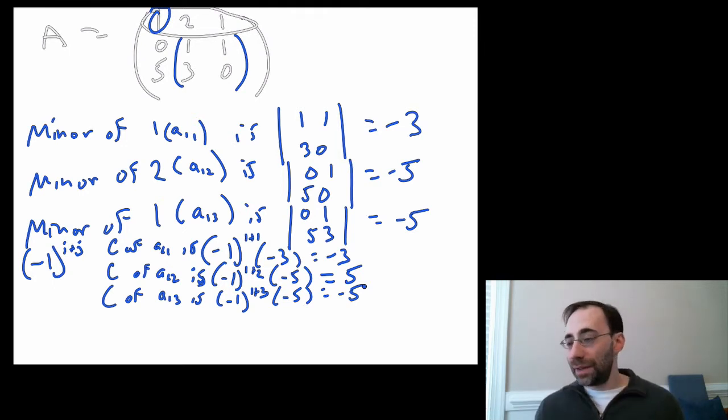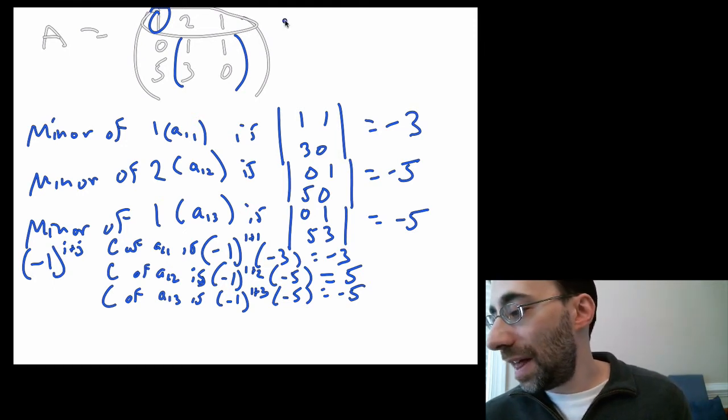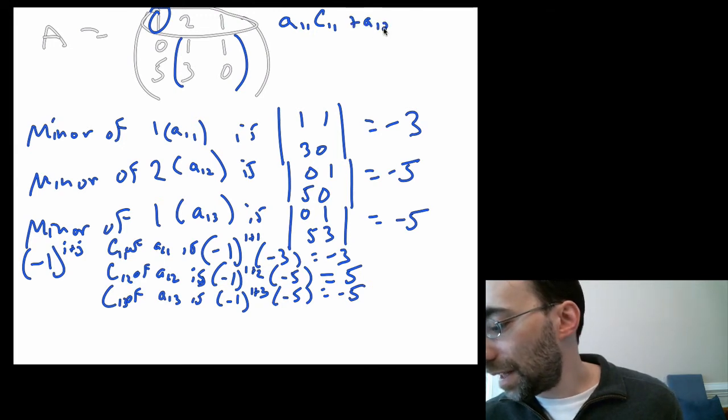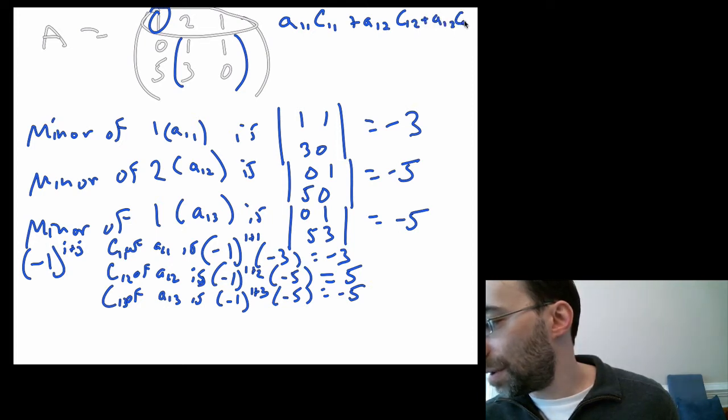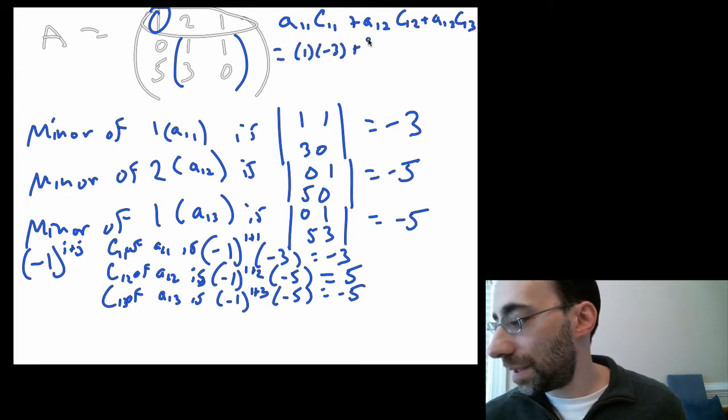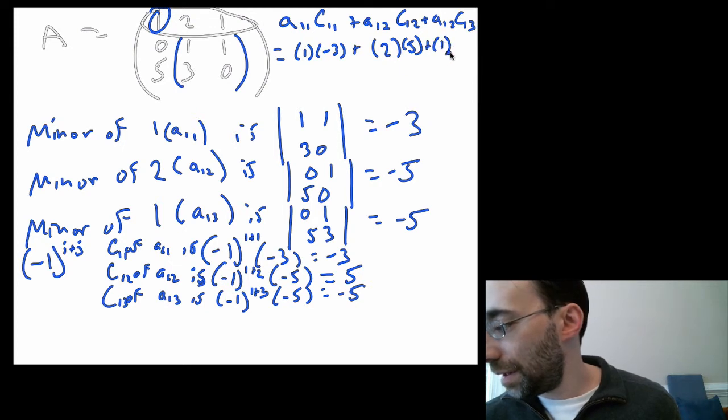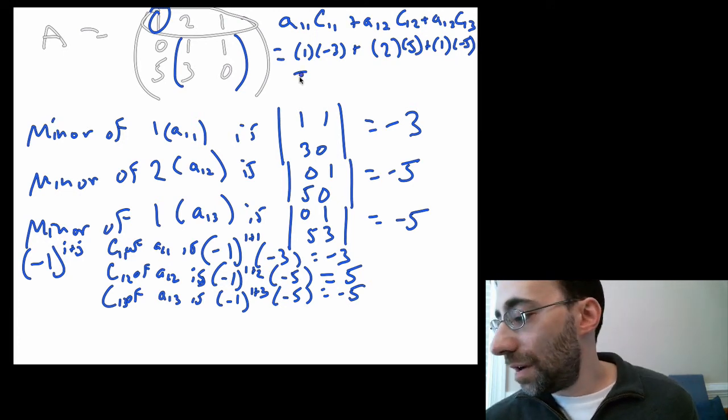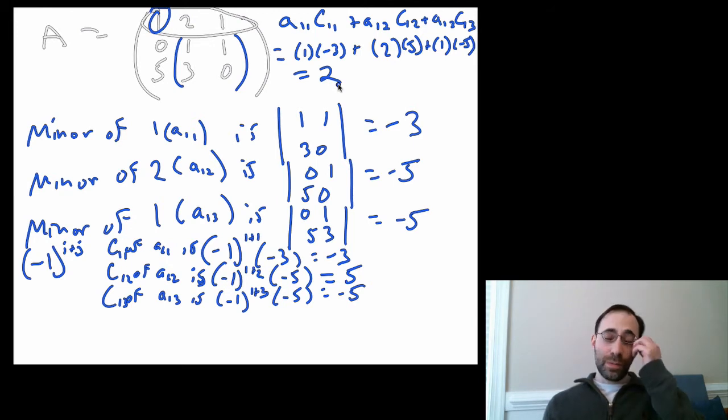And that's most of it. And now to finish off, the overall determinant, in this case, expanding across the first row is the element times its cofactor. It's the cofactor of each one plus the next element times the cofactor plus the last element times the cofactor. That equals 1 times negative 3 plus A12 is 2 times 5 plus 1 times negative 5. We get negative 3 plus negative 5 is negative 8. 2 times 5 is 10. So the overall thing is 2. So the determinant of this matrix is 2.